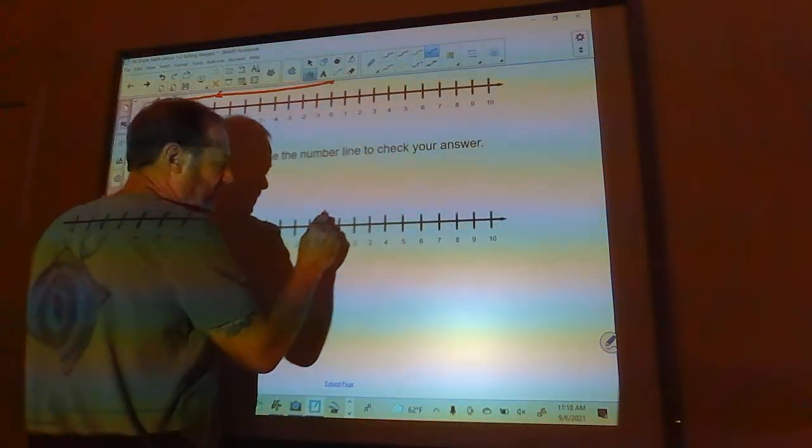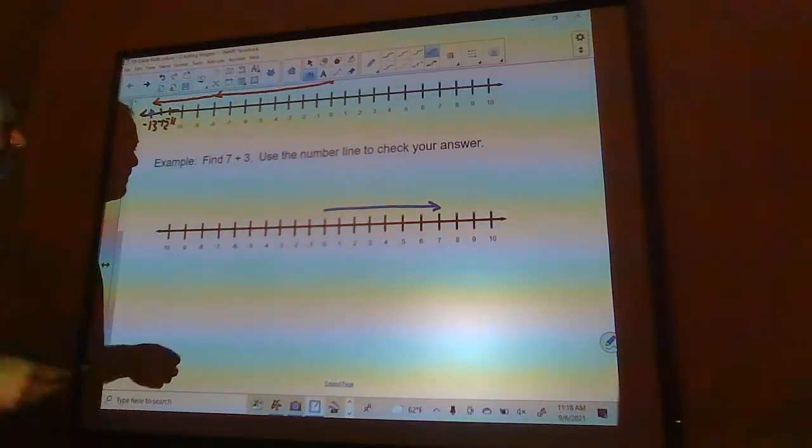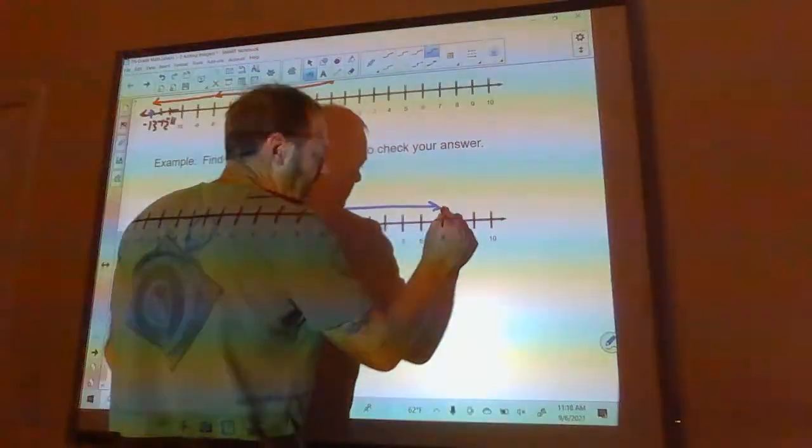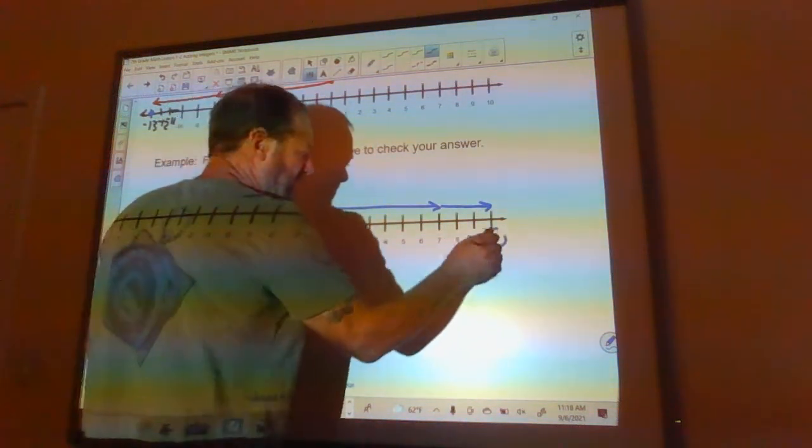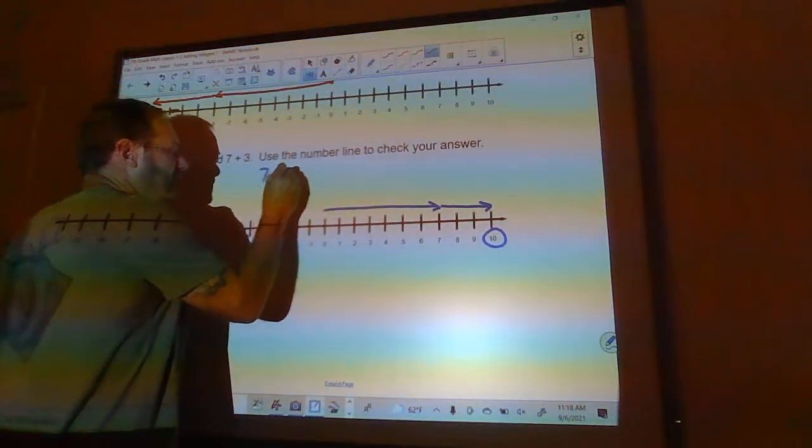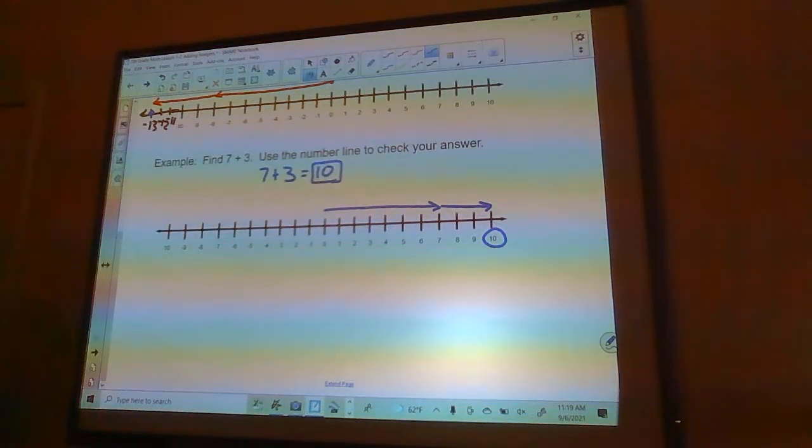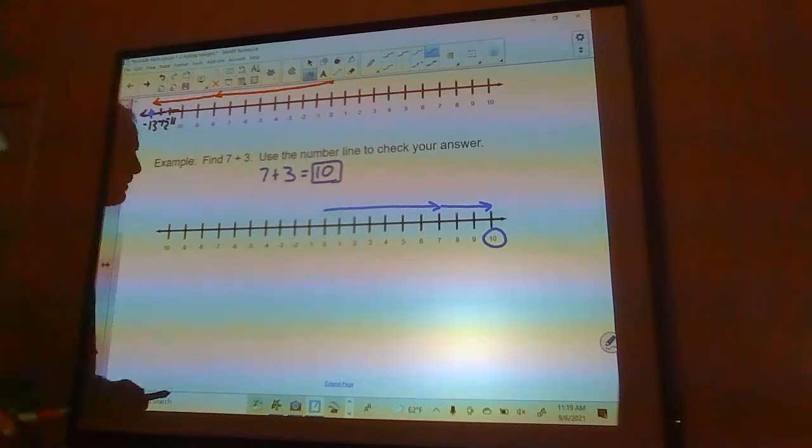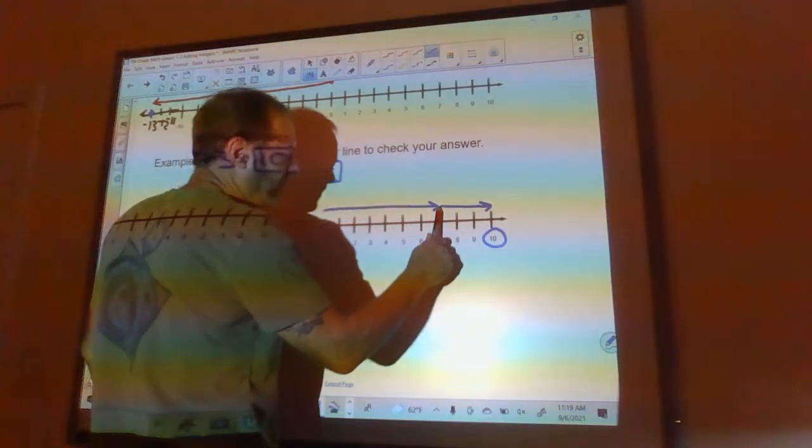Okay, now this one we don't have negative numbers, we've got positive numbers. So we've got 7 plus 3. So 7, we're starting out at 0, we're going to go 7, so we go to the right this time. And then we go 3 more to the right: 1, 2, 3, right there. So we end up at 10. So 7 plus 3 is 10. There's our answer.